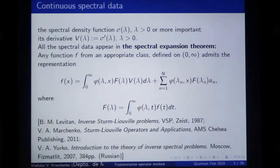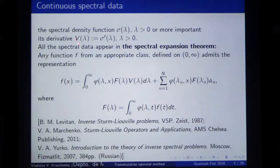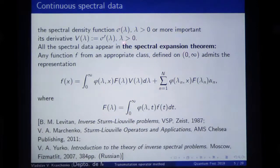More precisely, even not the spectral density function itself — nobody needs it. What is needed is its derivative. I will call this derivative the function V of lambda. Why is the derivative needed and not the spectral density function? Because it can be seen from the well-known fact called the spectral expansion theorem, which is in fact one of the possible definitions of the spectral density function.